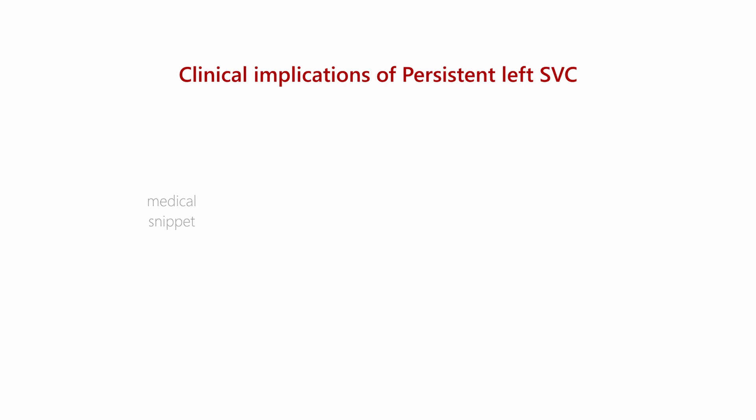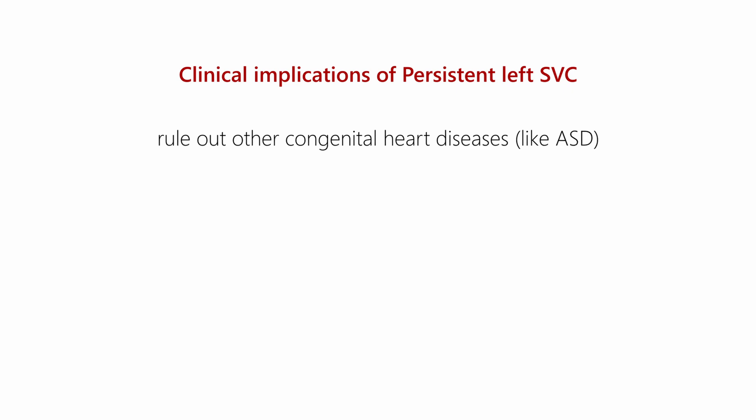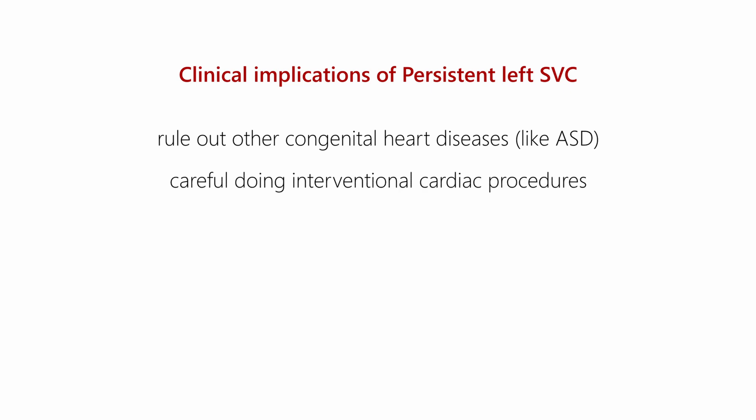When the left SVC is found incidentally, what are the clinical implications? The presence of left SVC mandates ruling out associated cardiac anomalies, the most common being atrial septal defects. One must be very careful in performing interventional cardiac procedures requiring left upper limb venous access, as it may injure the coronary sinus, leading to cardiac tamponade and death.